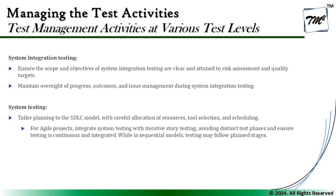The next activity is to maintain oversight of progress, outcomes, and issue management during system integration testing. A manager should find ways to track progress, various outcomes, and how issues will be managed. Issues here are not just limited to defects — there may be collaborations and contributions from other stakeholders. Test management should actively participate to ensure the team gets everything needed for integrating the system with other systems, making stakeholder collaboration a key aspect here.